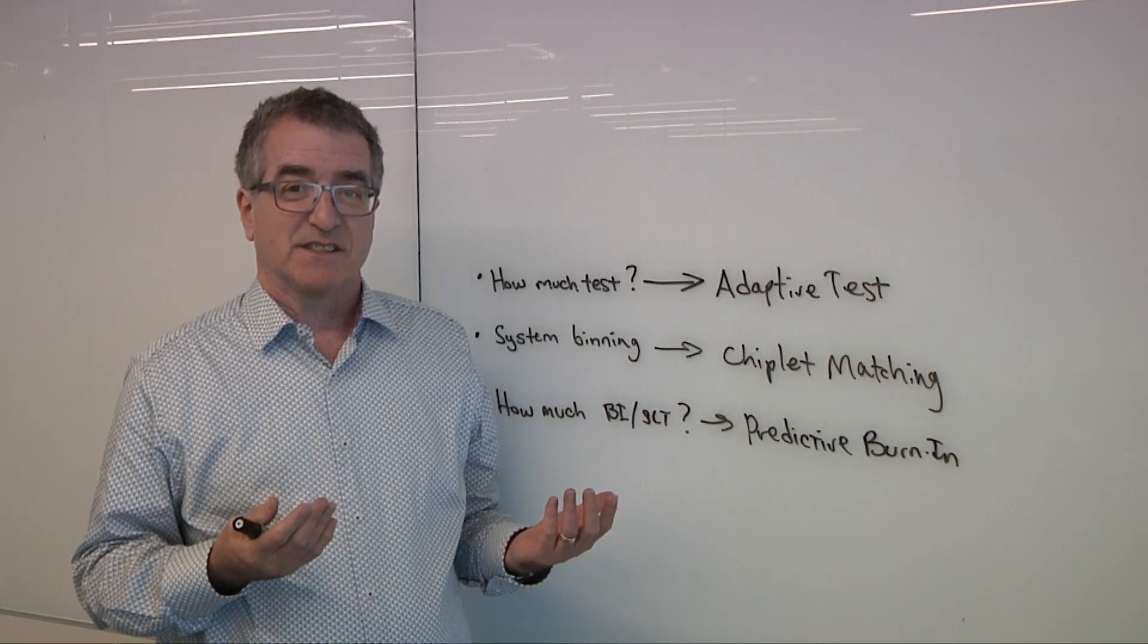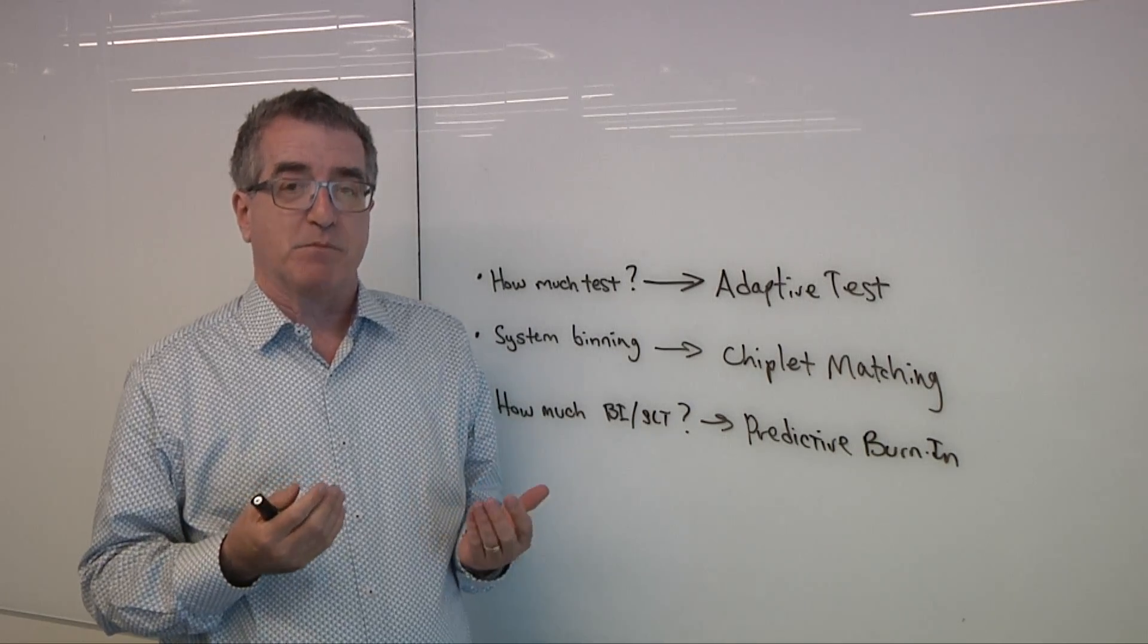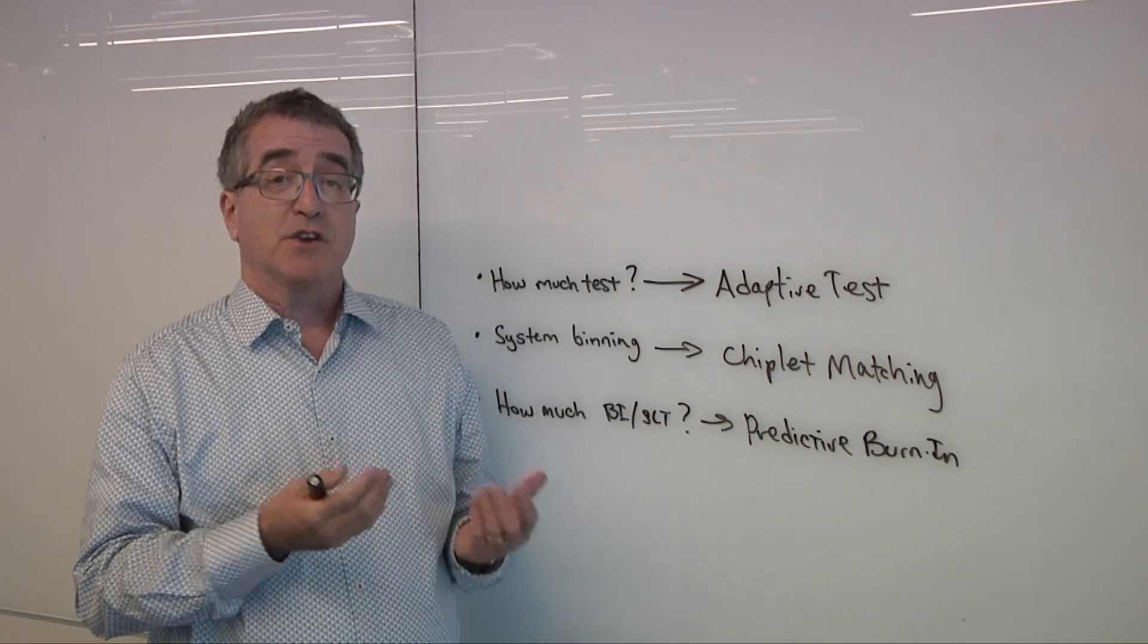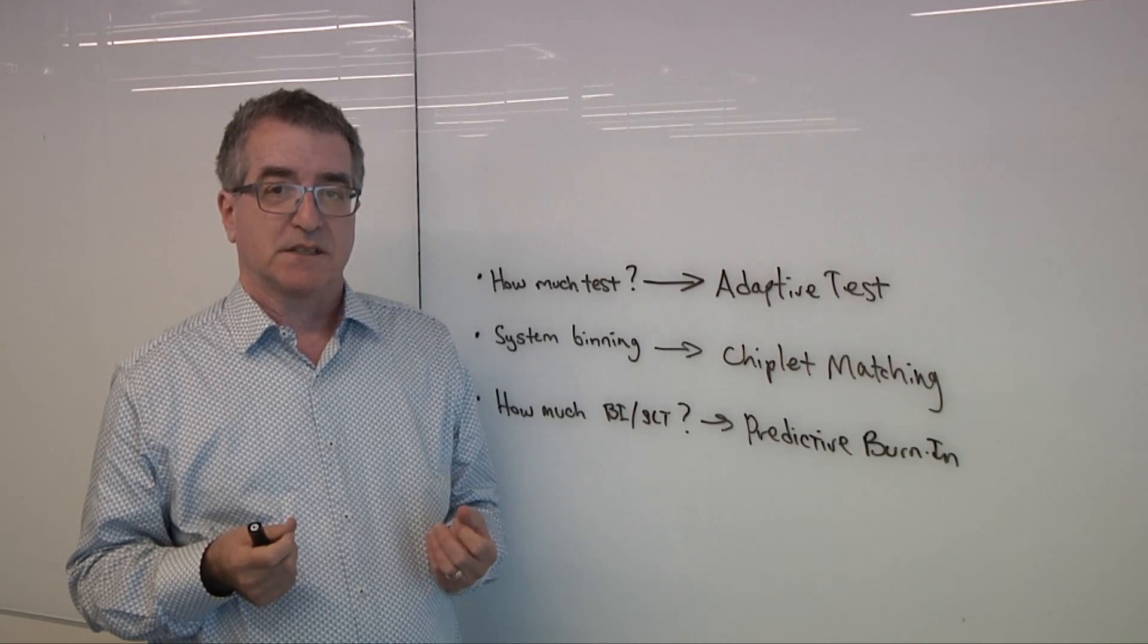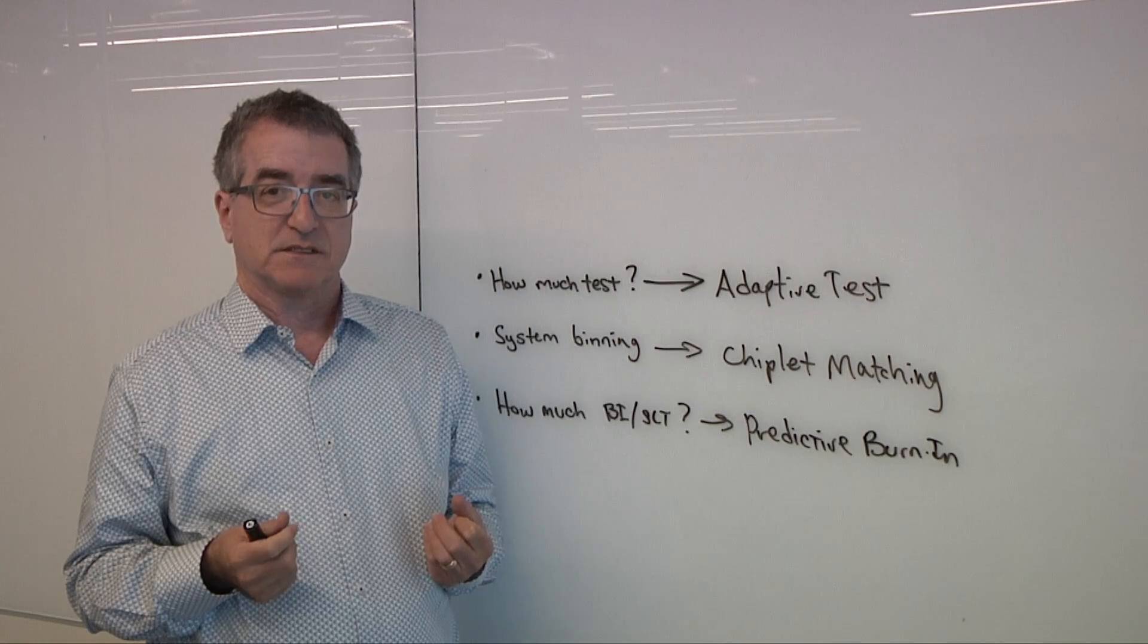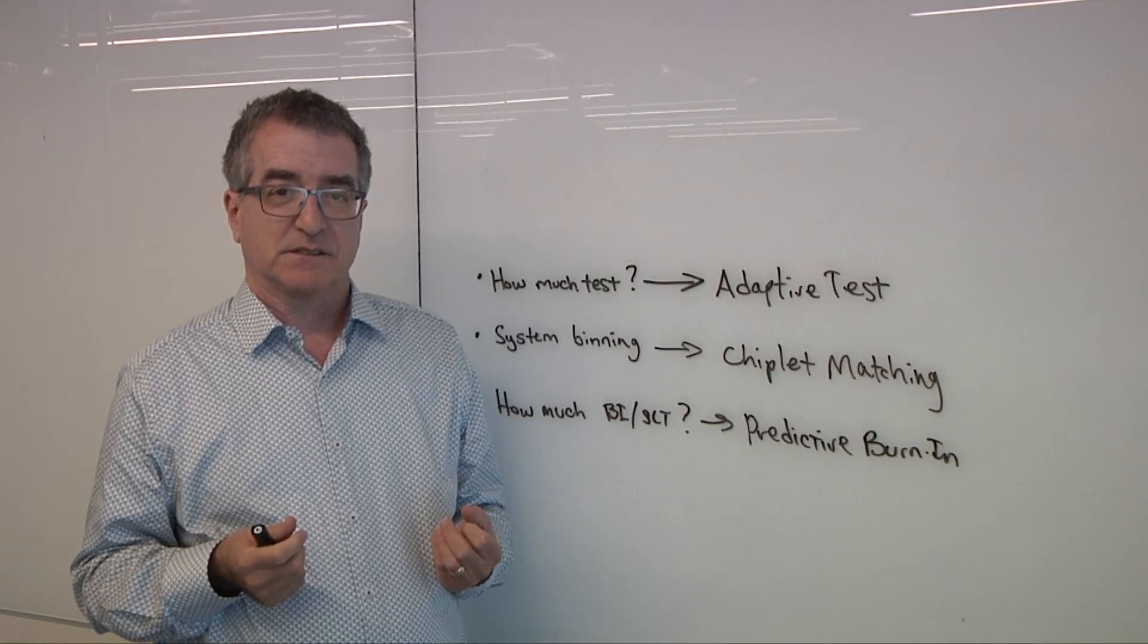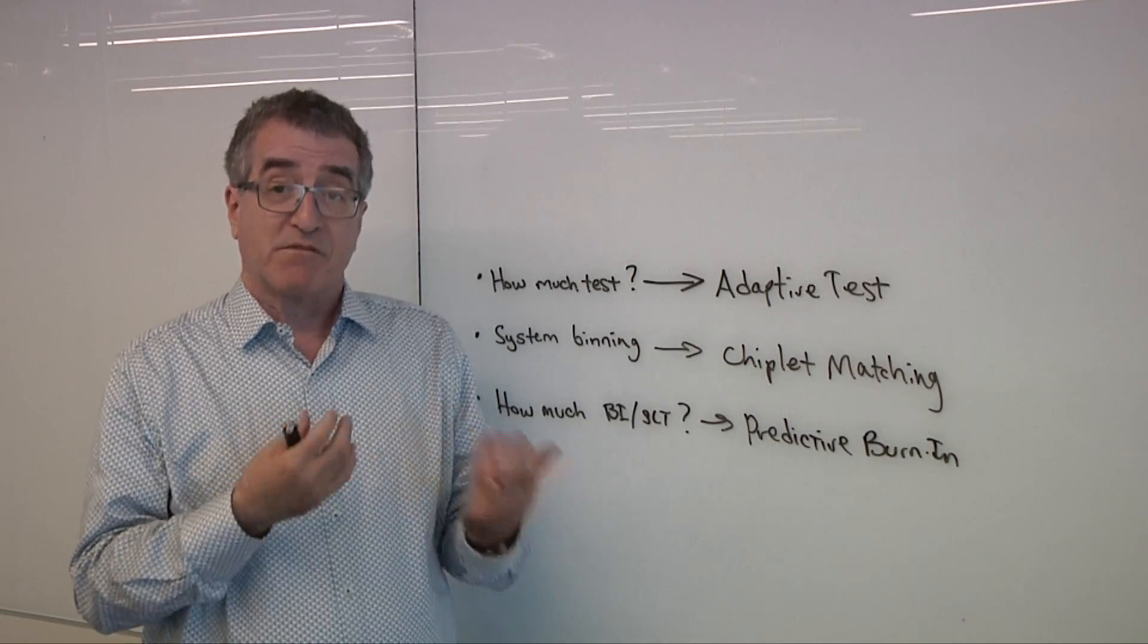And you could have dozens of chiplets in a single device, right? Yes. We've seen numbers of chiplets from two to 50. And that variation in performance is additive too, right? So if you have one chiplet that's bad and it's 5% less, and you have another one that's 5% less, you don't go 5%, it's now 10% for the whole thing. It can be. It can also make it non-functional.